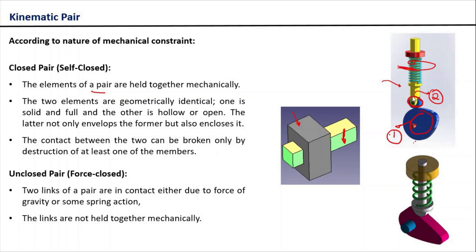Now the same is true even if you remove this spring. If you remove this spring, the link two will be in contact with the link one because of the force of gravity. In such type of cases, such kinematic pairs are called unclosed pairs.